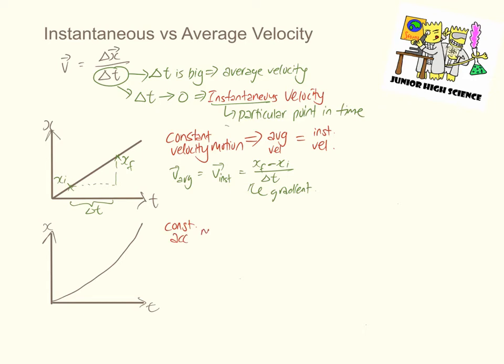In the second example of a position-time graph, we see a constant acceleration motion, where the velocity of the object is changing.